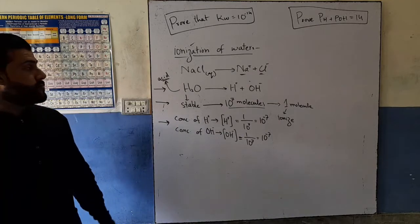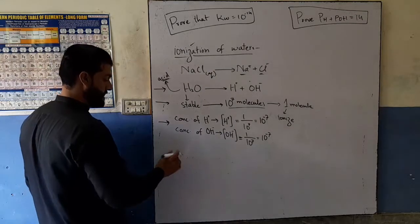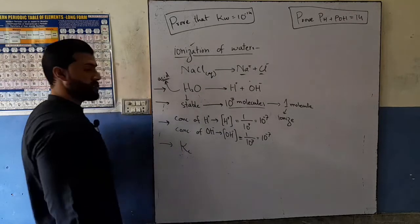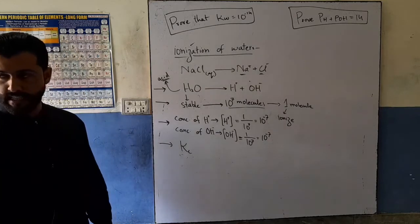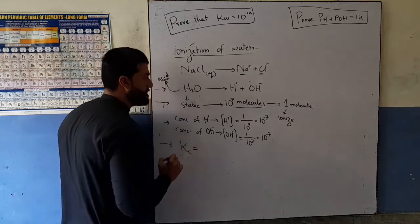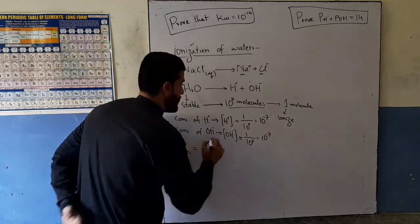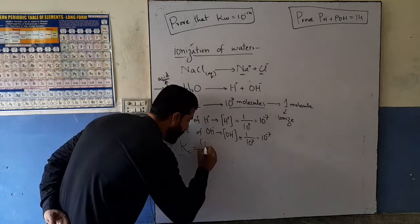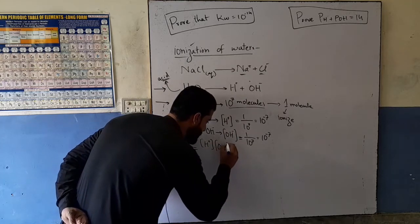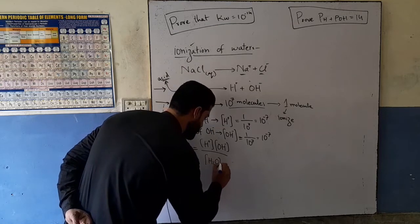Now we write the reaction and move to point number 4. We recall the equilibrium constant — Kc — which is calculated from products divided by reactants. Products include hydrogen ion and hydroxyl ion; the reactant is water.